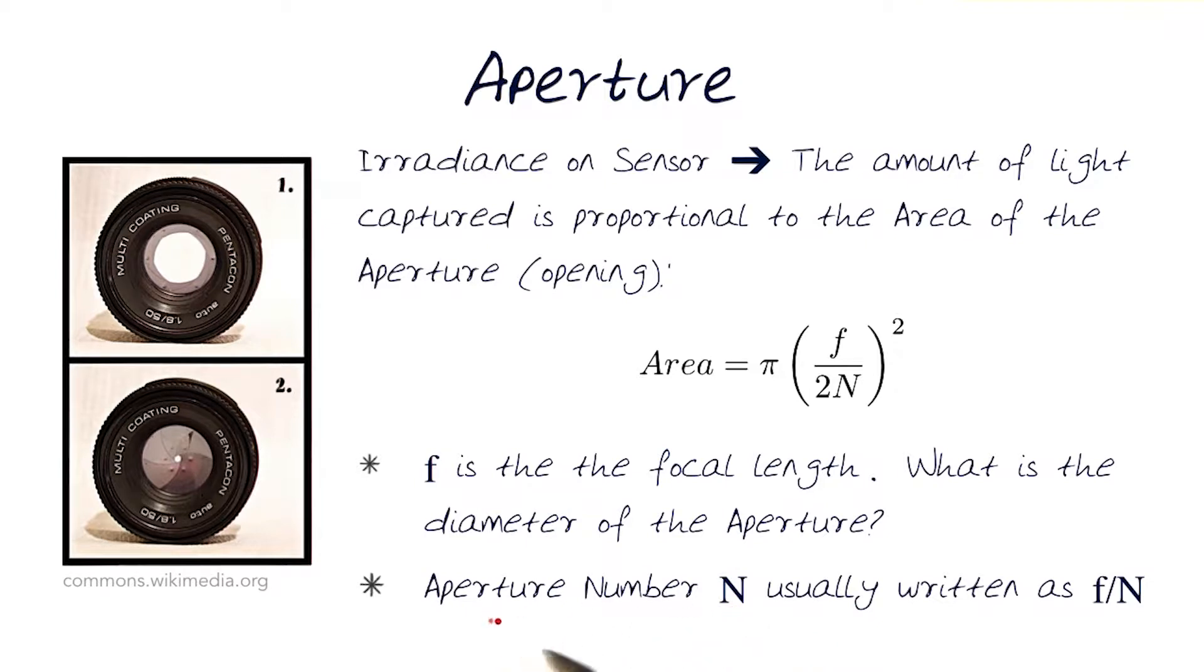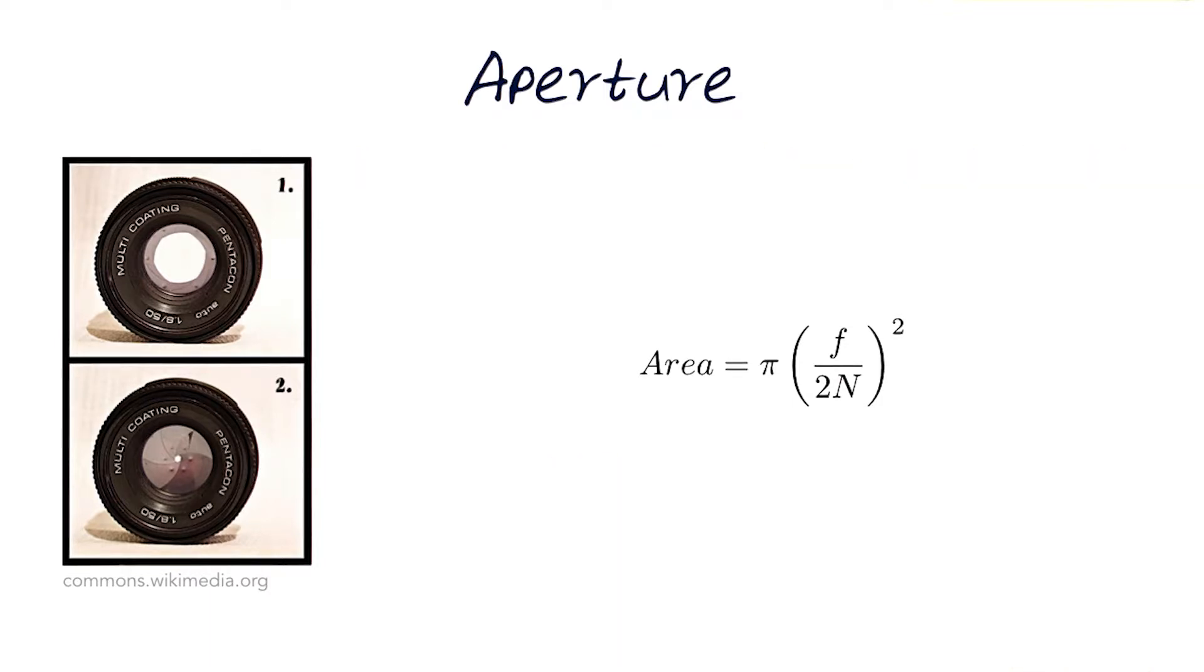Usually, in most cameras, you'll actually see the aperture number, or even if you look at the metadata of your image, the aperture number would be written as a capital N, and usually written as f/N. Let's look at this in a little bit more detail.